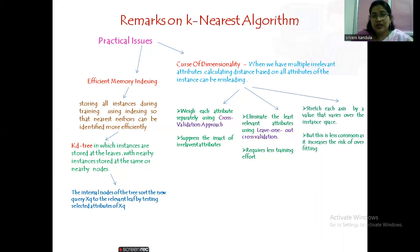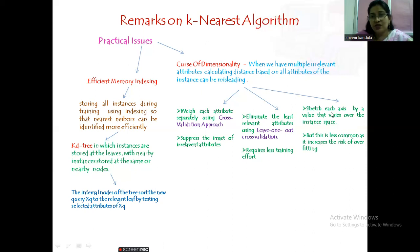Another approach is stretching each axis, but this is a less commonly used procedure. If some attribute is troubling us, we can stretch the axis by a value that varies over the instance space — but this is done for computational convenience rather than based on what the data says, and overfitting may result. It is better to use the cross-validation or leave-one-out cross-validation approach. This concludes the remarks on the K-Nearest Neighbor algorithm.